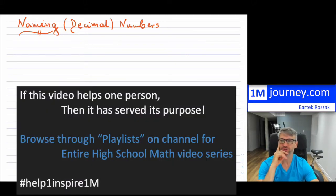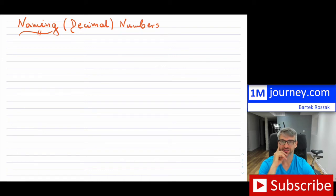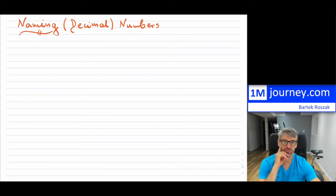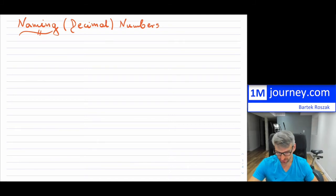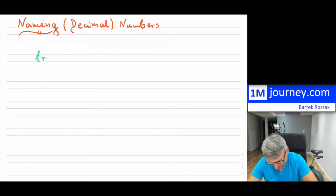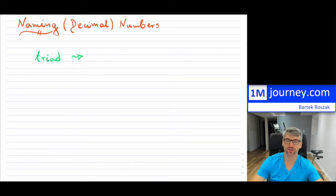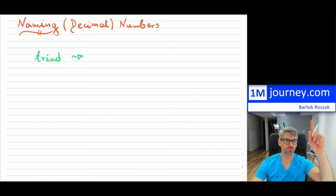All right, happy return to the videos. So naming numbers - I'll go into naming decimals. It's interesting; when students are given numbers, it's rare that we fill out checks nowadays, but it's still useful to know how to name numbers. When you begin naming, the first thing you should know is how to name a triad, which is basically a grouping of three numbers. Numbers are separated into these triads, and then we give each triad a name. If you know place values for decimal numbers, that makes naming a lot easier.